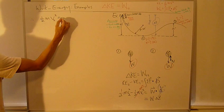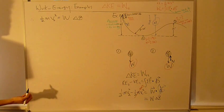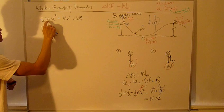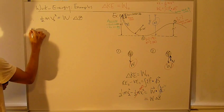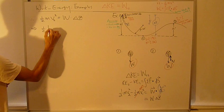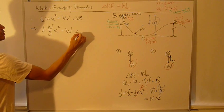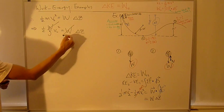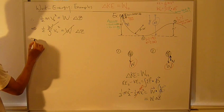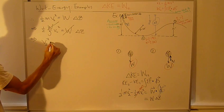v2 squared equals weight times dz. Mass is weight divided by g. v2 squared equals weight times dz. Weight and weight cancels out.